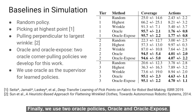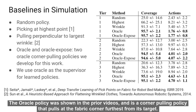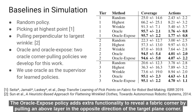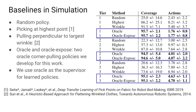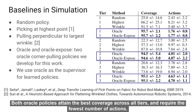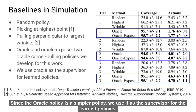Finally, we use two oracle policies: oracle and oracle exposed. The oracle policy is a corner pulling policy that pulls at the fabric corner furthest from its target. The oracle exposed policy adds extra functionality to reveal a fabric corner by pulling an above layer in the opposite direction of the target plane corner. However, in our experiment, we found this policy did not attain significantly better performance than the oracle policy. Both oracle policies attain the best coverage across all tiers and require the fewest number of actions. Since the oracle policy is a simpler policy, we use it as the supervisor for the learned policies.